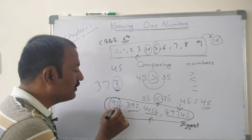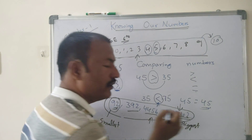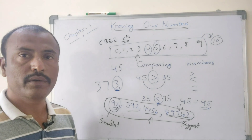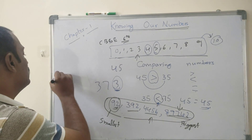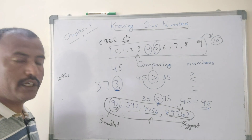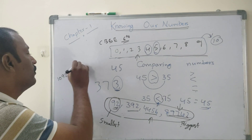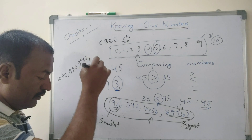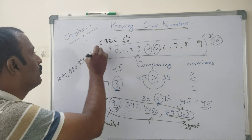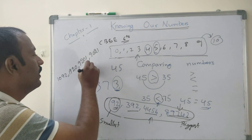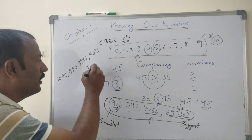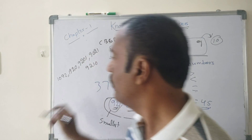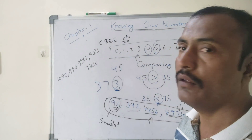One more example: compare 1092, 1920, 920, and 921. Find the biggest and smallest in this series. Here we compare and find out the biggest number — in this series we can find out the smallest as well as the biggest number.